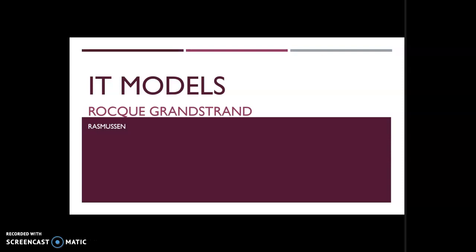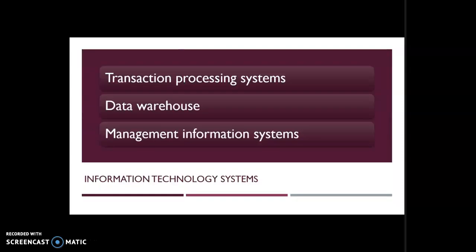This is my IT models. Transaction processing systems is a system that provides support to the operations of the organization, such as sales orders, production orders, and accounting data that is input into these systems daily. The data is used to provide information to other employees in the organization.